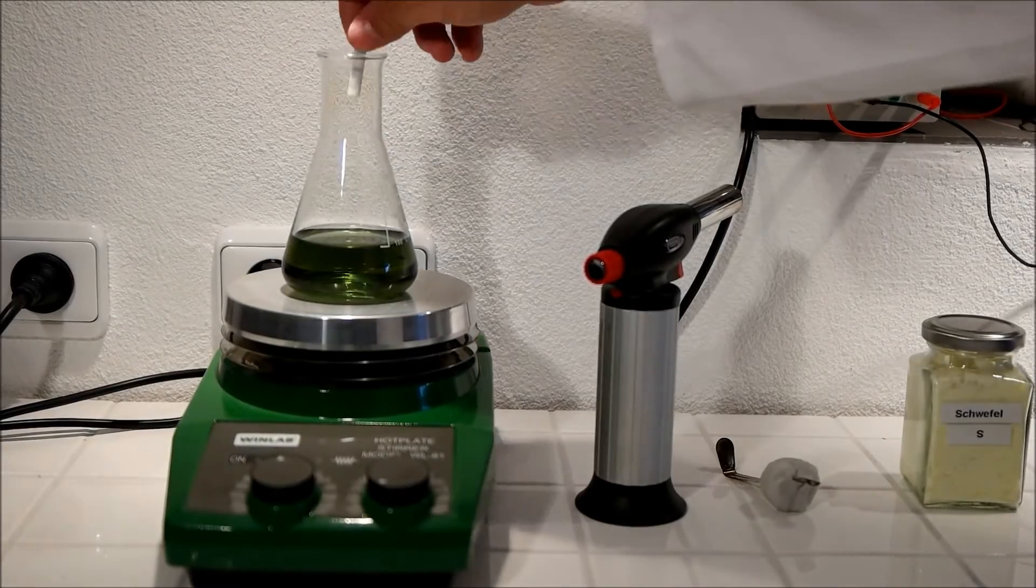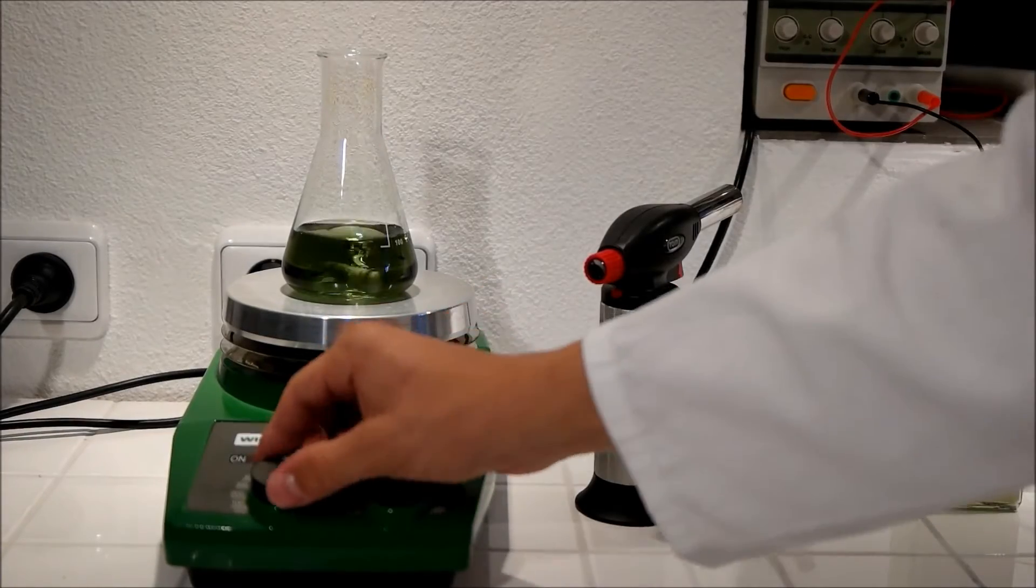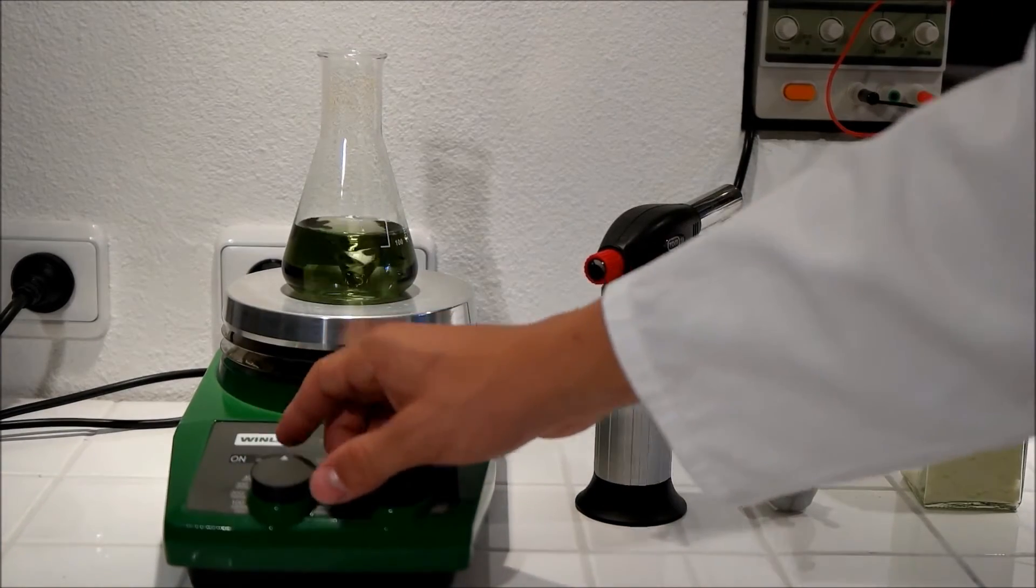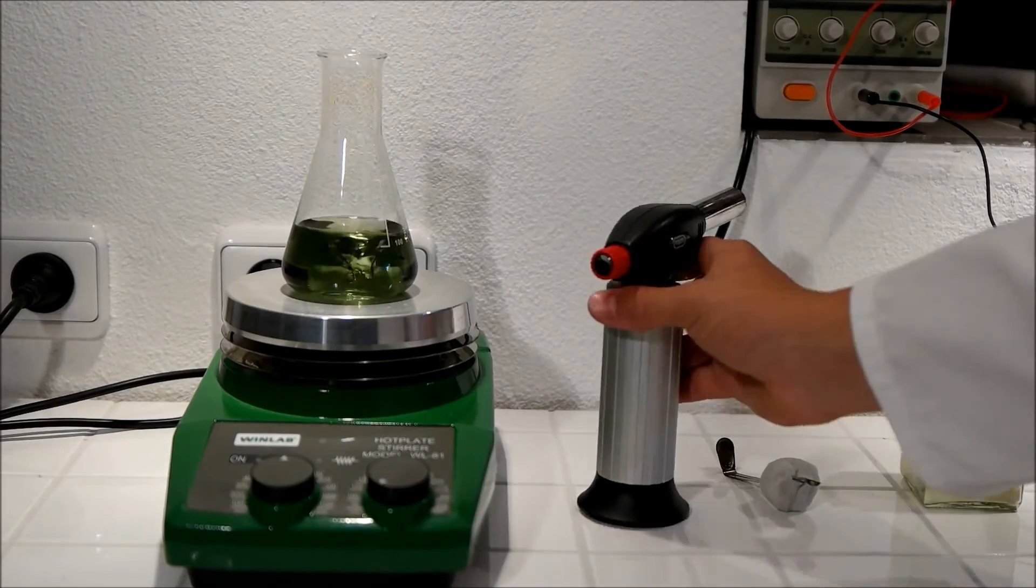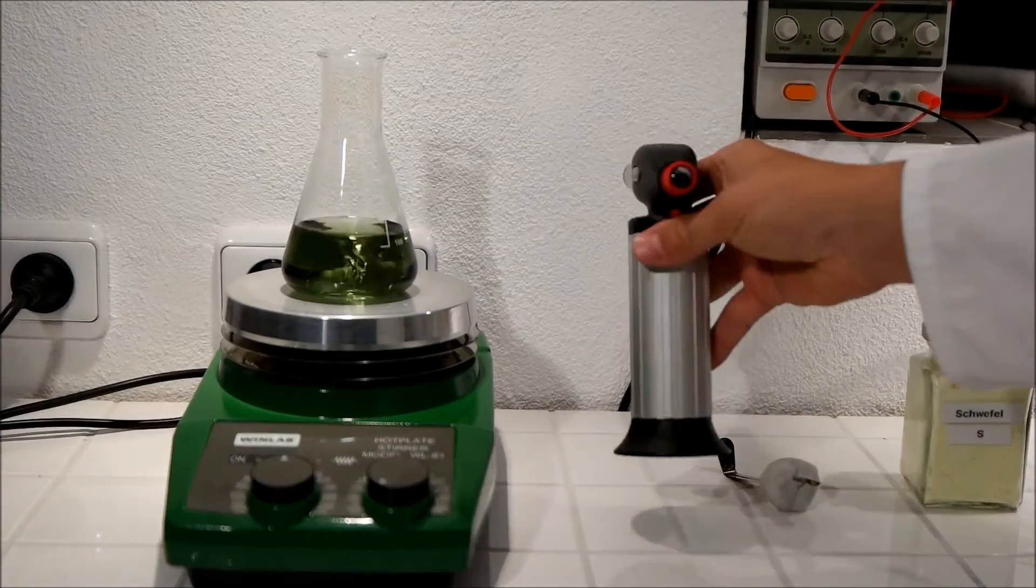So I put a stirring bar in the Erlenmeyer flask and stir it at around, yeah, six, seven hundred RPM with the bromothymol blue solution. And I think I'm gonna use this Bunsen burner to light up the sulfur.